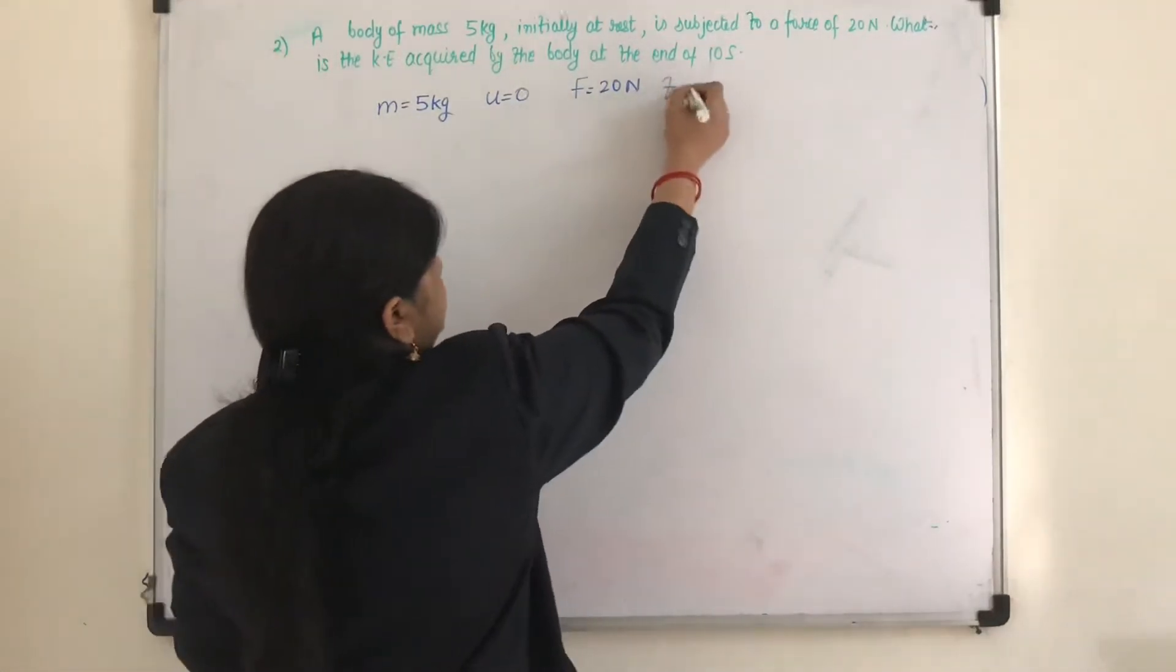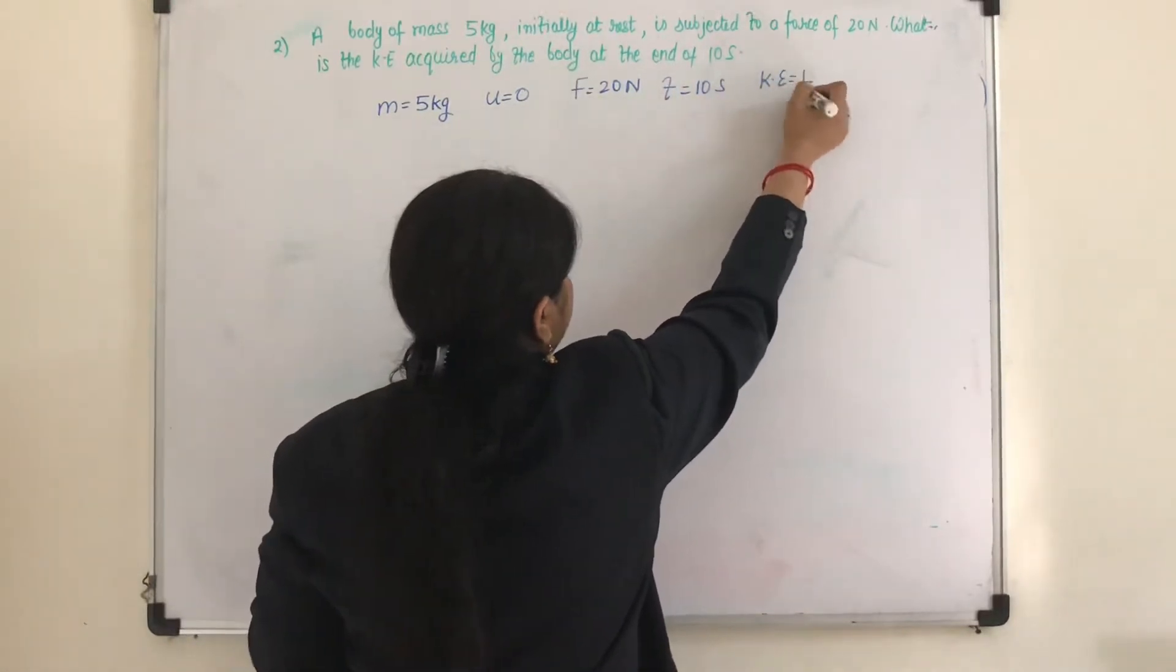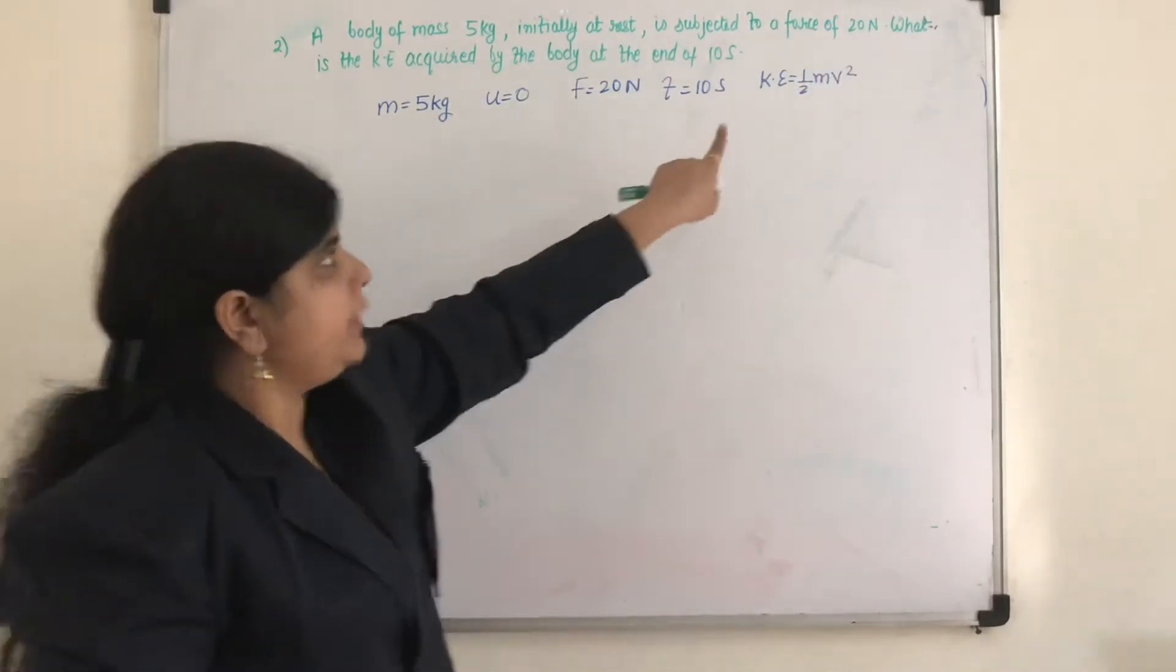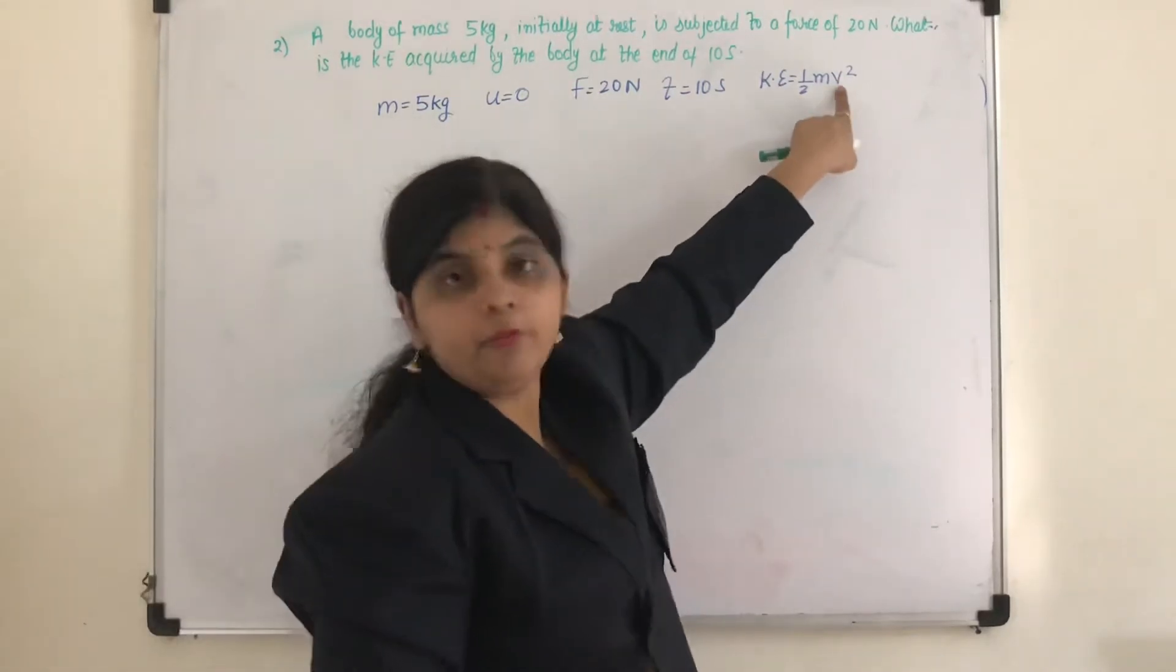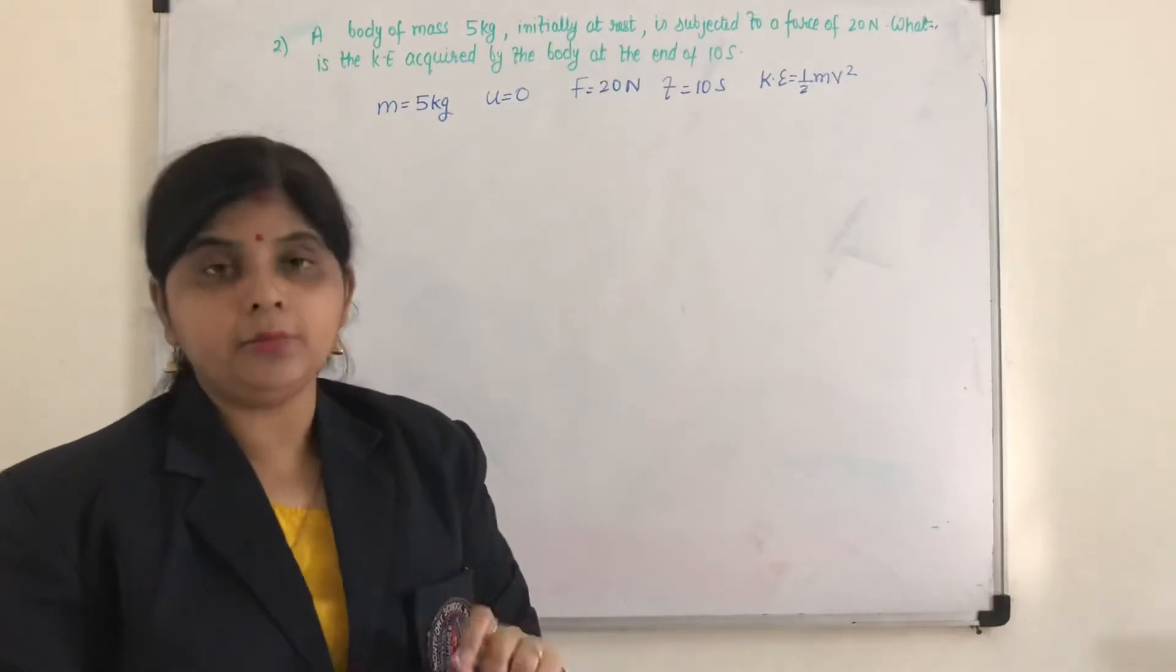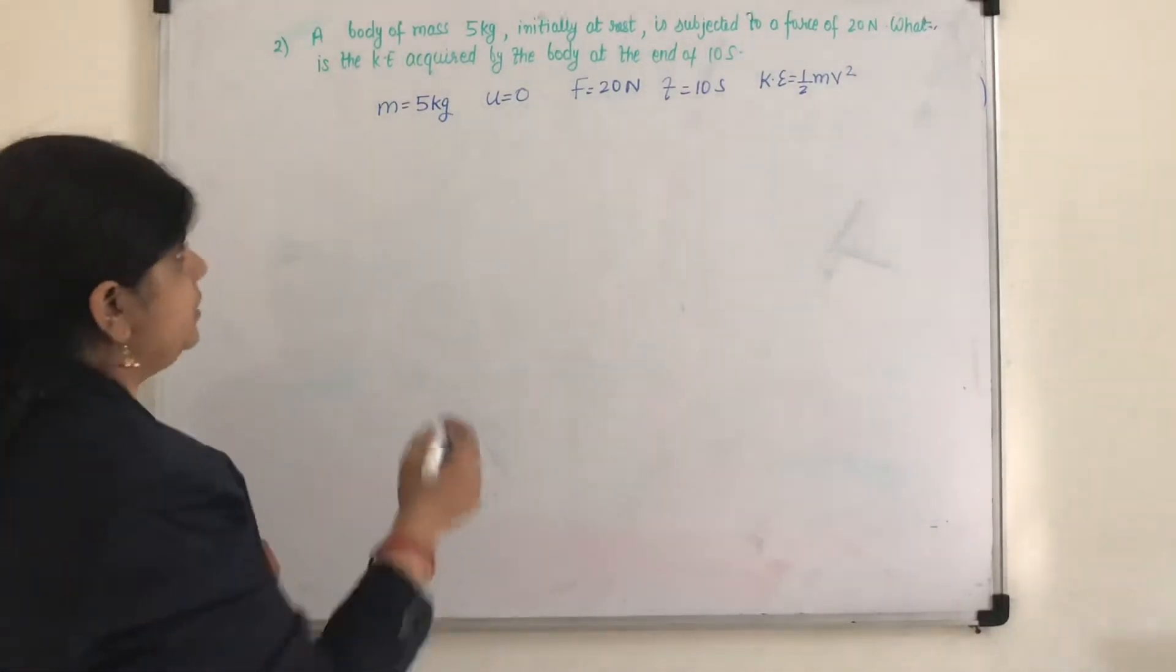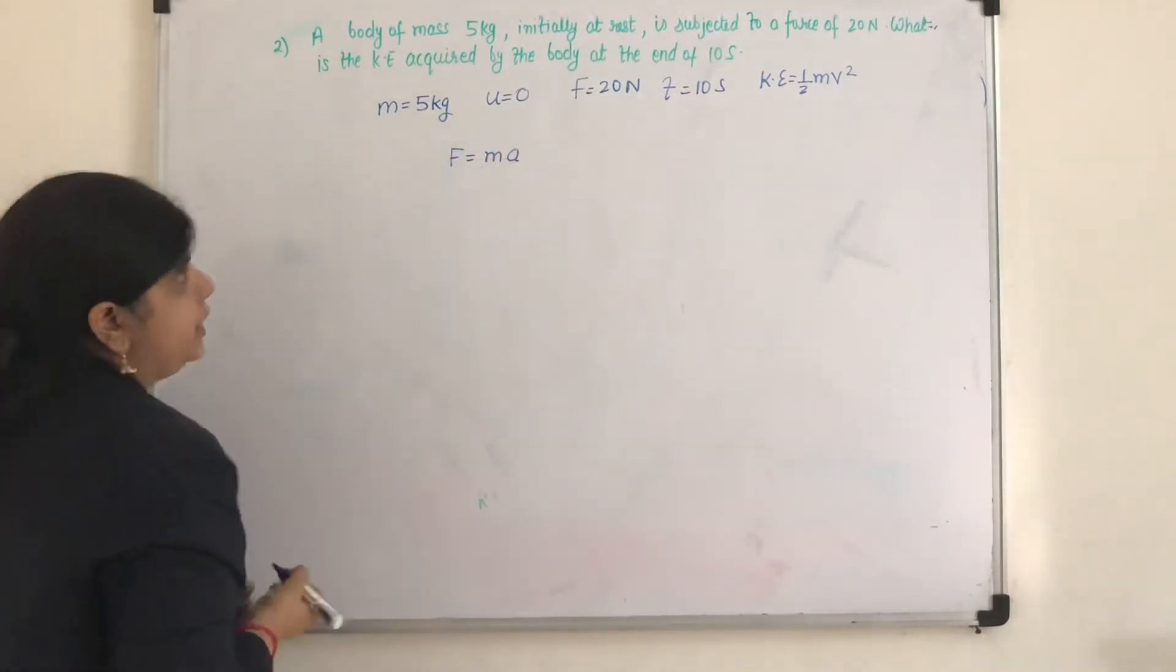What is the kinetic energy acquired by the body at the end of 10 seconds? So time is 10 seconds and we need to find the kinetic energy, that is half m v square. Children to find kinetic energy m is given to us. But I don't know the value of final velocity v. So first I need to calculate the velocity v.